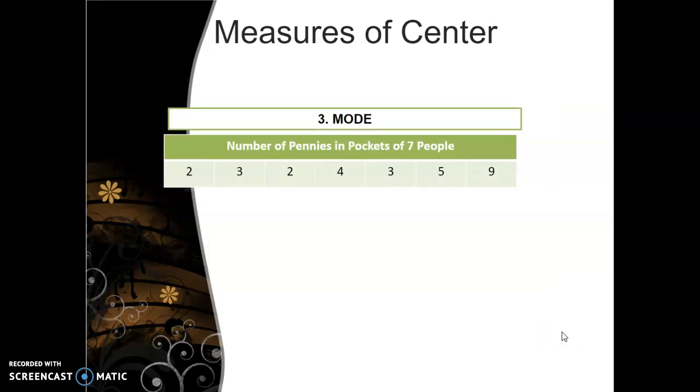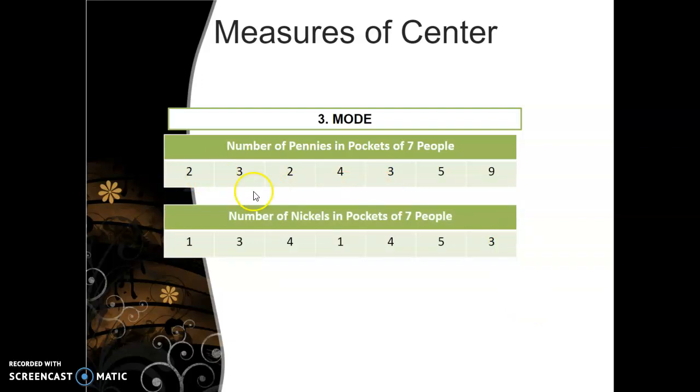Okay, let's do a couple of quick examples of mode. Let's say number of pennies in pockets of seven people. So if you look at this set of data values, I've got 2, 3, 2, 4, 3, 5, 9. Now two values here occur twice, but no value occurs more than twice. So this would be considered bimodal. It has 2 modes, one of 2 and one of 3.